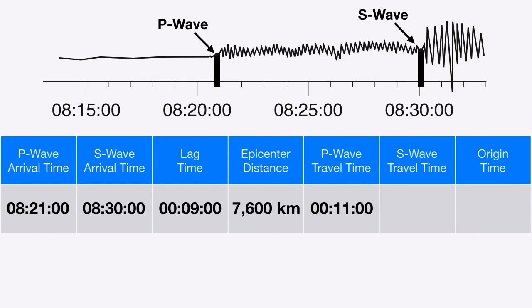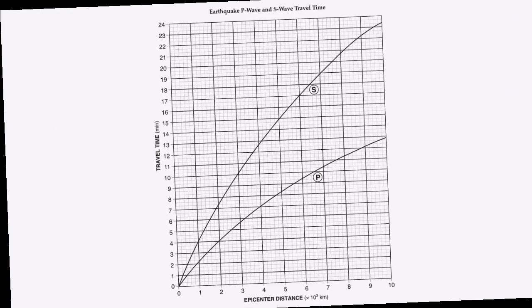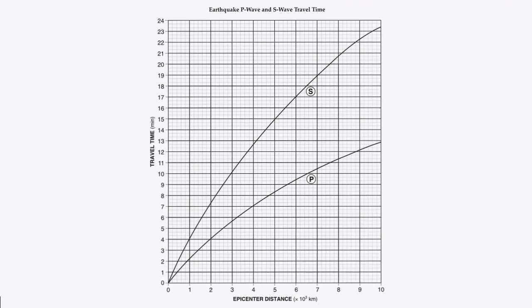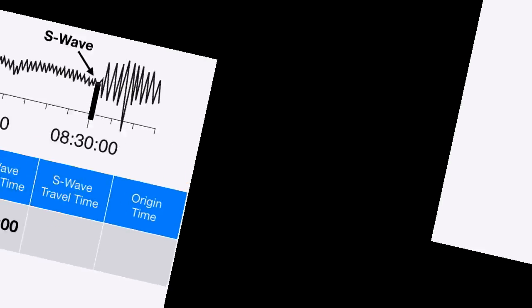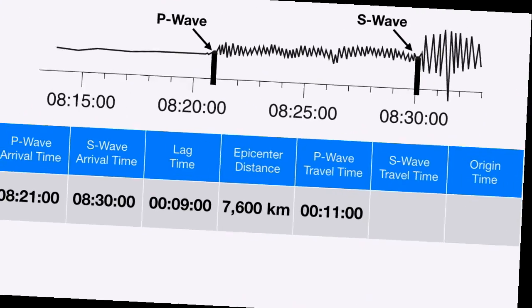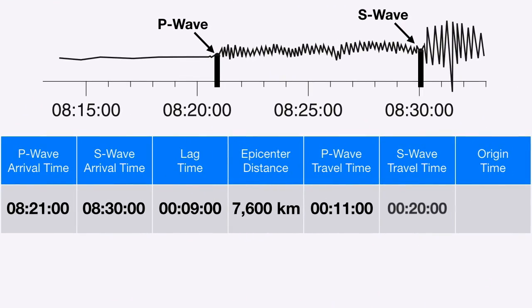We can do the same thing for the S wave. Back to my travel time chart, back to my distance of 7,600 kilometers, but this time I go all the way up to the S curve and over. I see that the S wave travel time is going to be about 20 minutes.